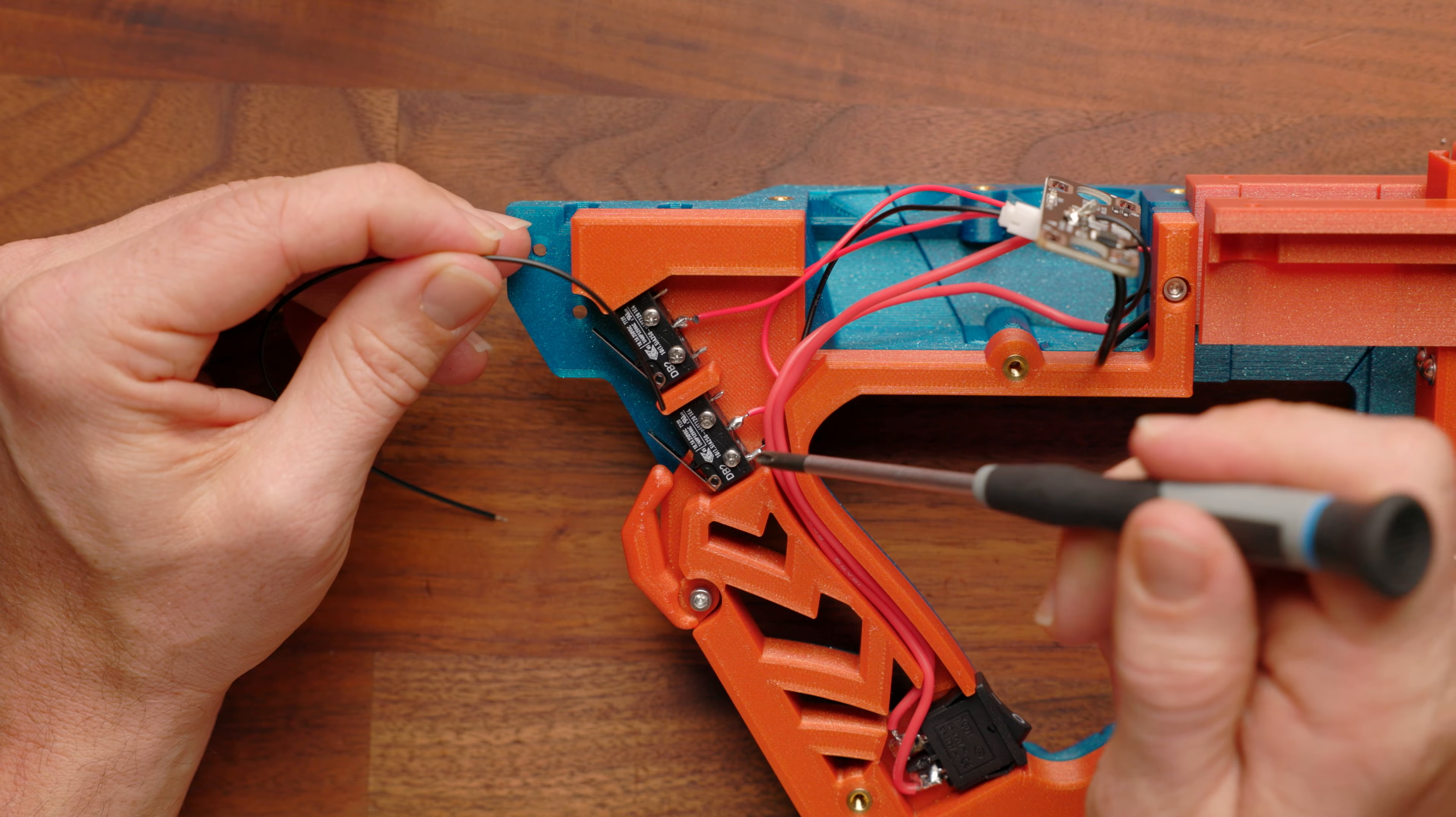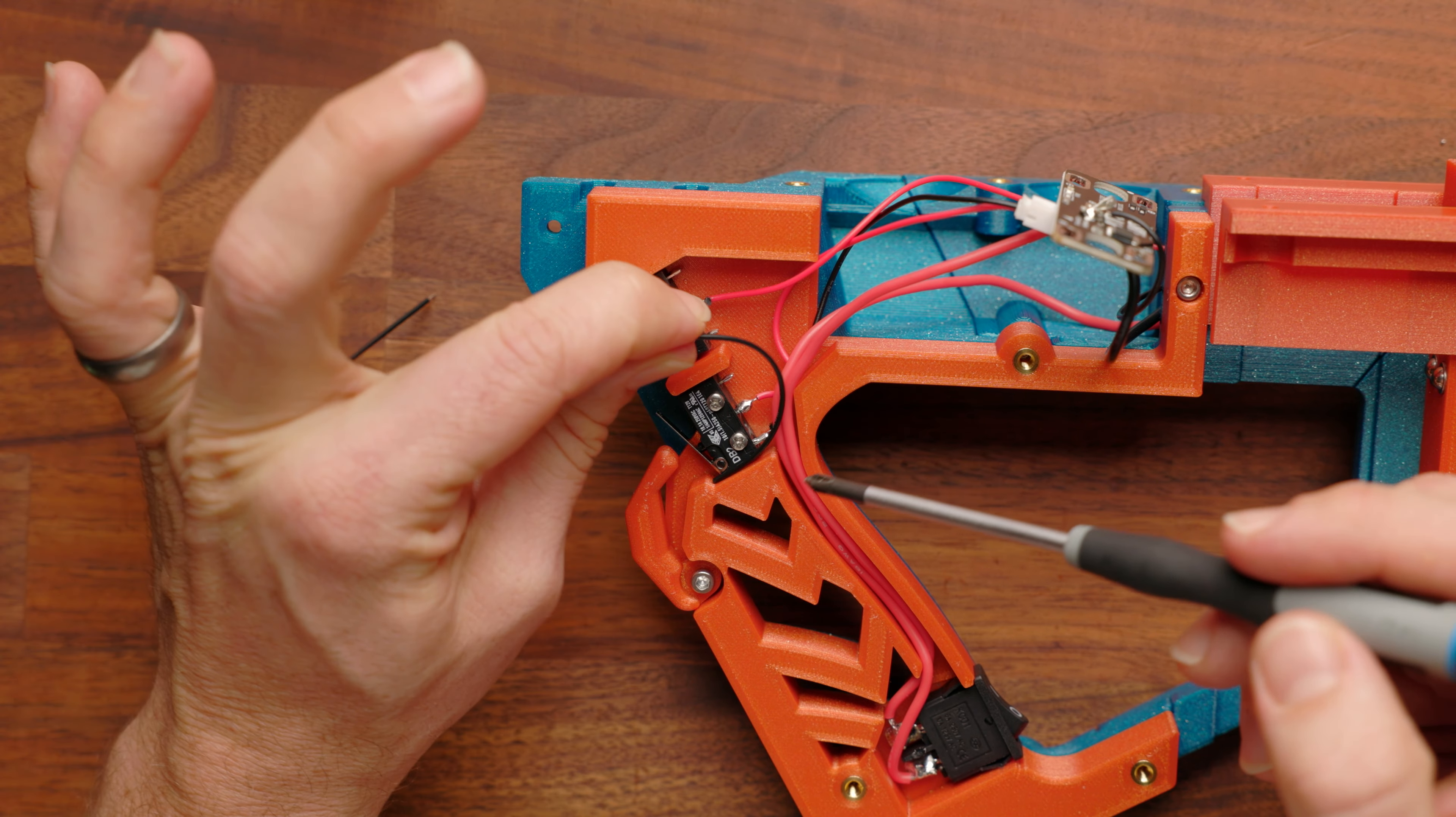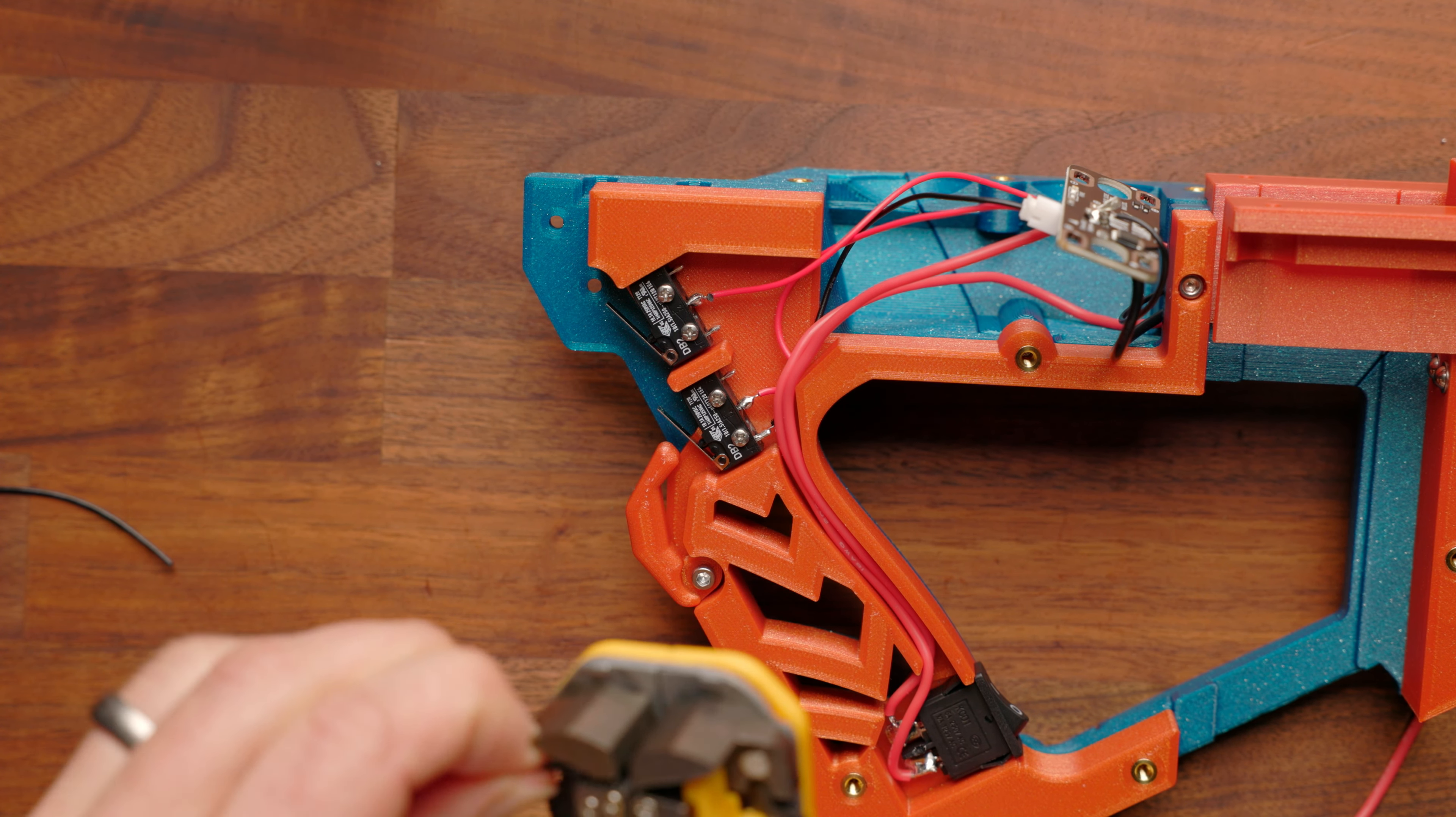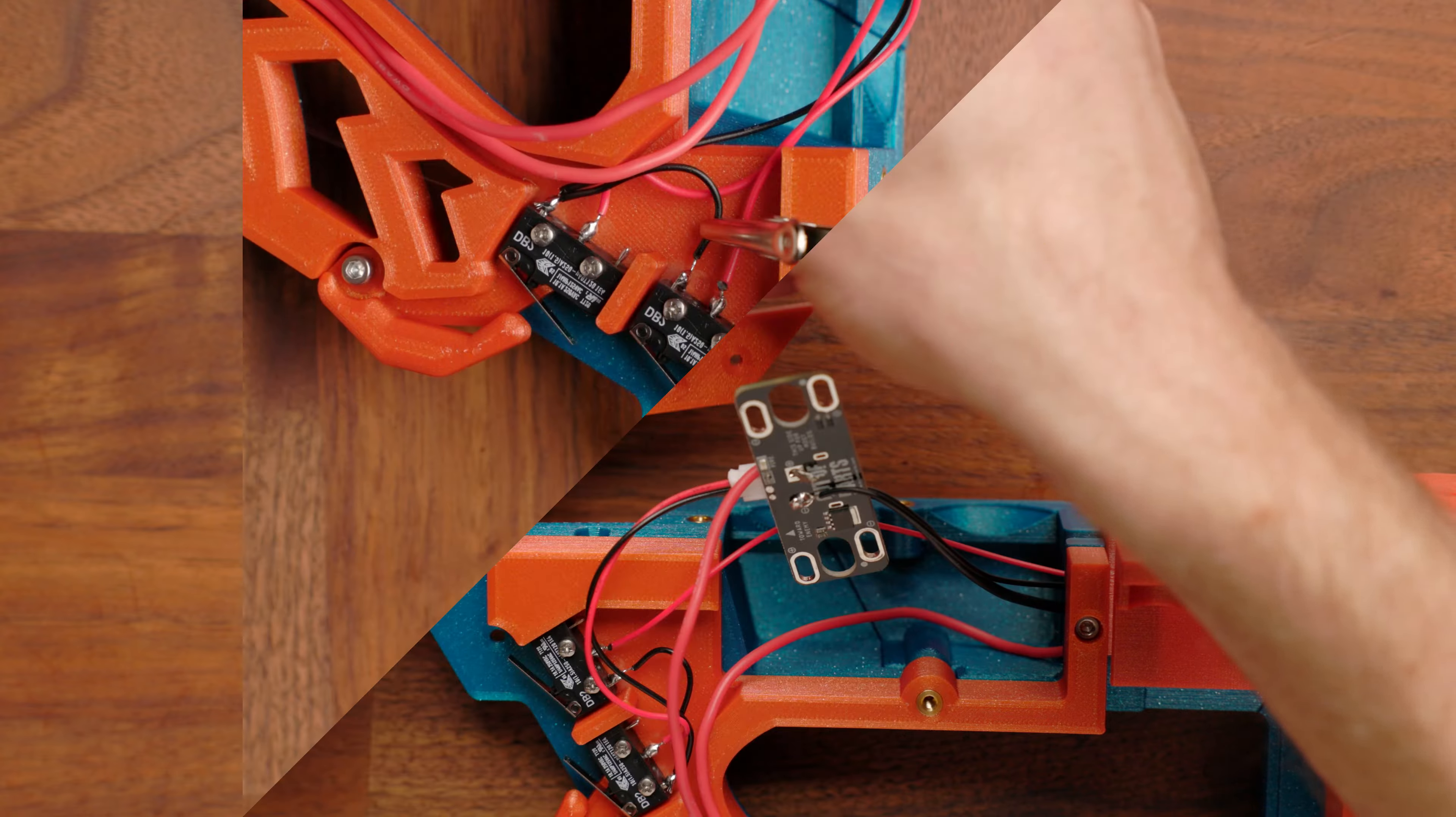And we'll pre-tin both those wires, and then we'll solder that one in place, and then the second one. Next, we're going to jump the two common terminals. That's this one here, and that one there of the two switches together, and you can use some of your leftover JST wire. You just need a little bit of a loop like that. So, I'm going to cut and prepare a two-sided stripped part with a little bit of pre-tinning on both ends.